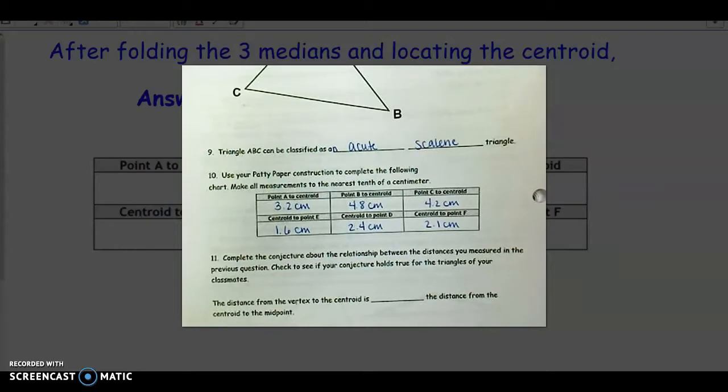Remember, that's just a conclusion we're coming to after observations. This is using inductive reasoning. So the distance from the vertex to the centroid, which is these top numbers, is how much compared to the distance from the centroid to the midpoint, which is these lower numbers.